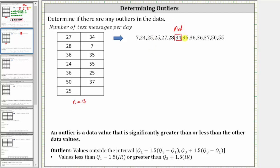Now we need to find quartile one and quartile three. Quartile one is the median of the lower half of the data. We don't include the median in the lower half, and therefore we have six data values, which is even, and therefore we have two middle values. We'll have to find the mean of the two middle values to determine quartile one. Notice if we draw a vertical line here, there are three data values to the left and right, and therefore 25 and 25 are both in the middle. So the mean of 25 and 25 is still 25, and therefore 25 is quartile one.